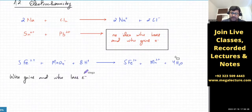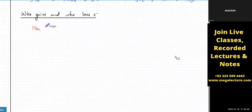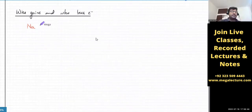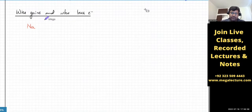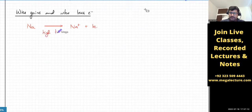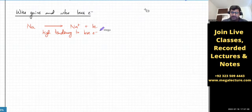The first question is: who gains and who loses electrons? How can we know what a substance would want to do? Let's pick sodium — something familiar. What does sodium like to do? It likes to lose electrons. We know it's one of the most reactive elements. So there's a high tendency for it to lose electrons. But can we give it a value? How can we quantify it?